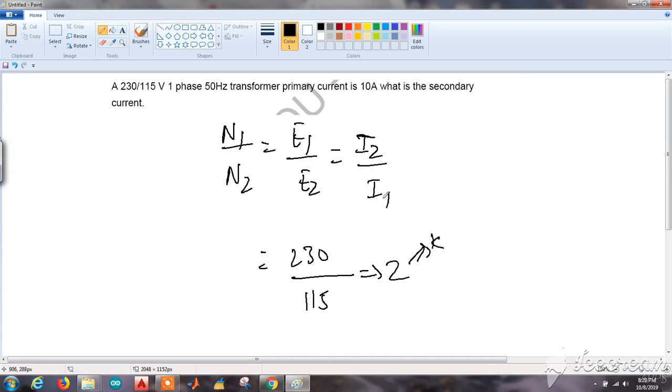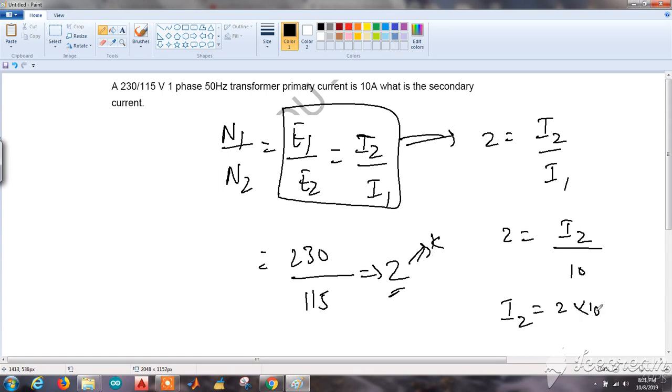Now we know that E1 by E2 is equal to I2 by I1. E1 by E2 came out to be 2, so 2 is equal to I2 by I1. The primary current is 10 amperes, so I1 is 10 amperes. So 2 is equal to I2 by 10. The secondary current I2 will be 2 into 10, that is 20 amperes.